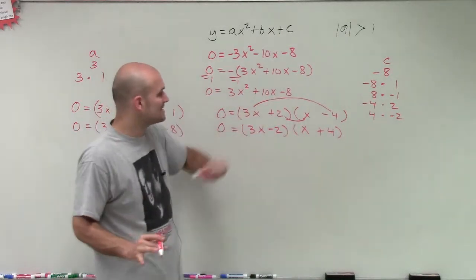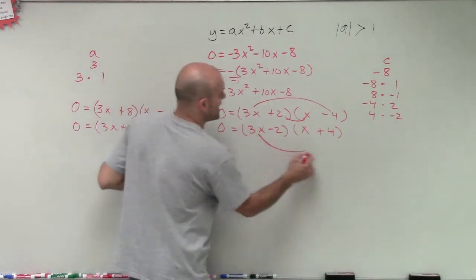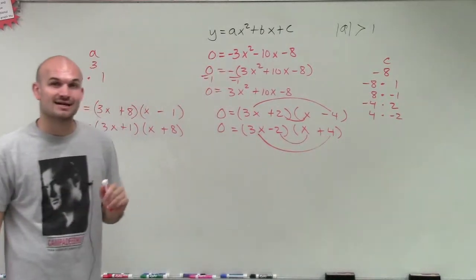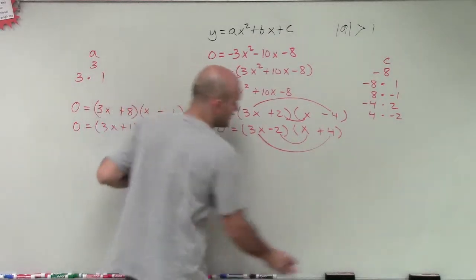So that's close, but I need a positive 10. But now if I see 3x times 4 is positive 12x plus a negative 2x is going to give me 10x. So therefore, that's my winner.